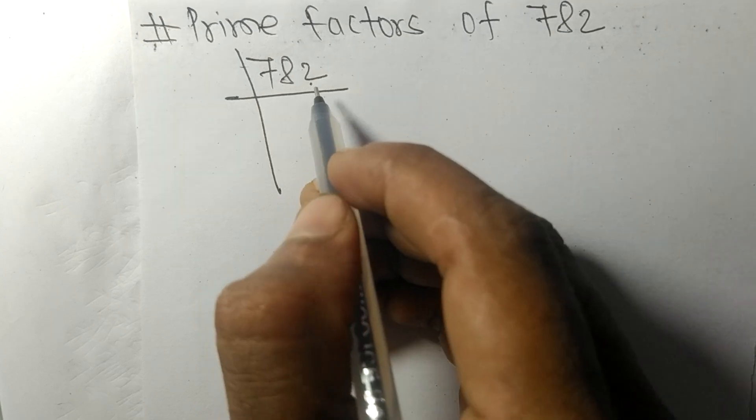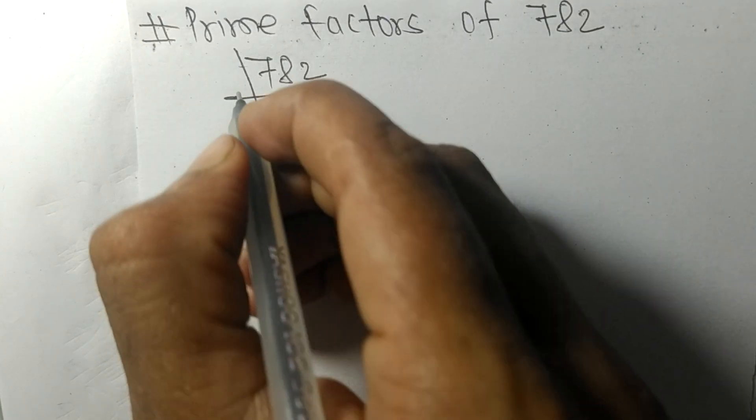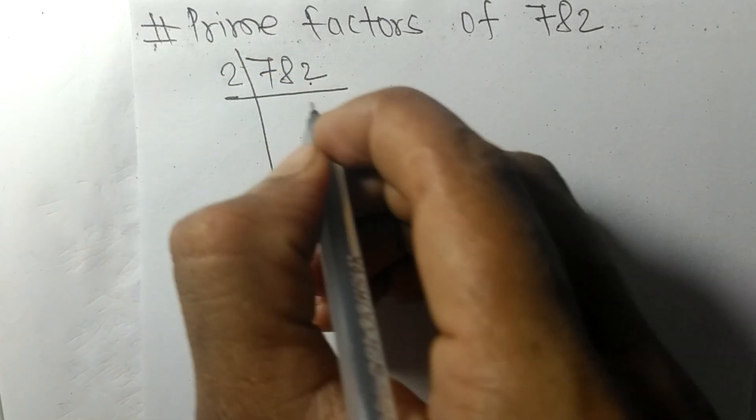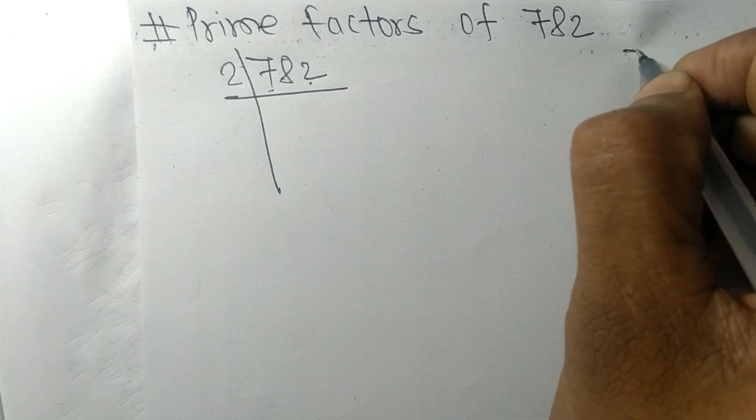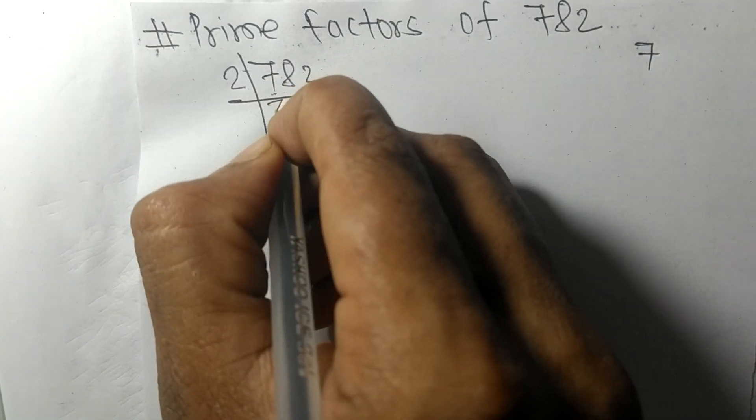It contains an even number 2, so the whole number is divisible by 2. First we have 7, so 2 times 3 means 6.